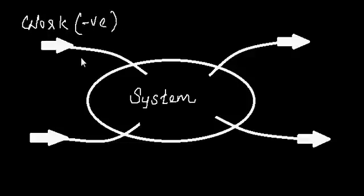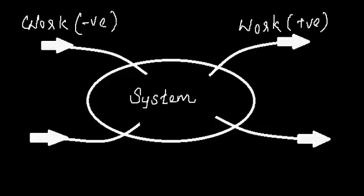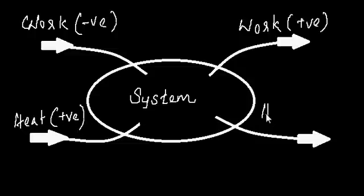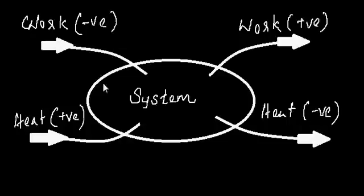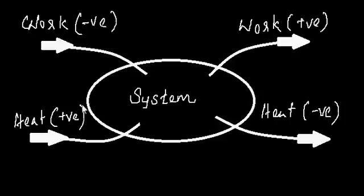When you input some work into the system, that is considered negative work. If the system produces some work as output, that is positive work. The case is reversed for heat: a heat input is positive and a heat output is negative. So: work input is negative, work output is positive, heat input is positive, heat output is negative. You only need to be clear about one and you can derive all the others. This sign convention is very important when you analyze energy, work, or heat.